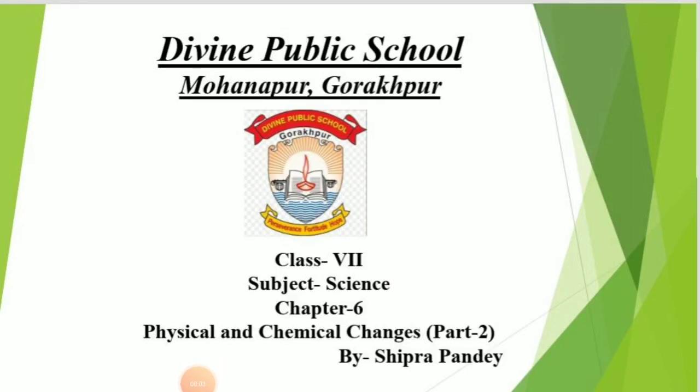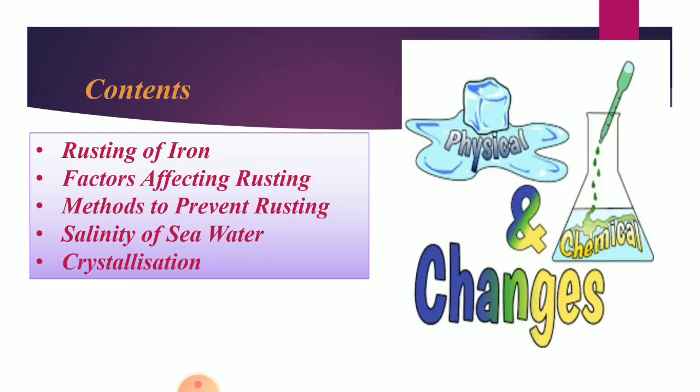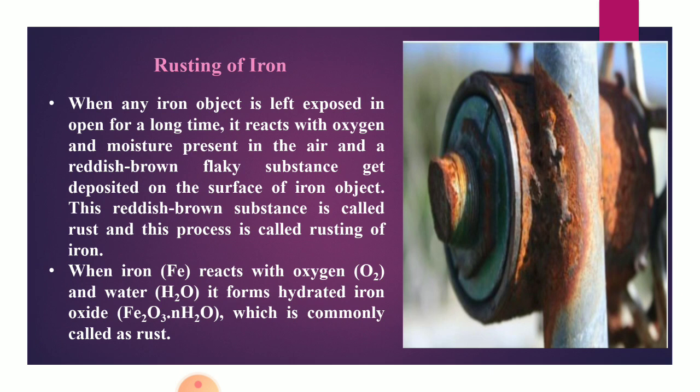Hello students, good morning. We are studying Chapter 6 - Physical and Chemical Changes, and this is the second part. In the previous video we studied physical and chemical changes with examples. In this video we will study rusting of iron, factors affecting rusting, methods to prevent rusting, salinity of sea water, and crystallization.